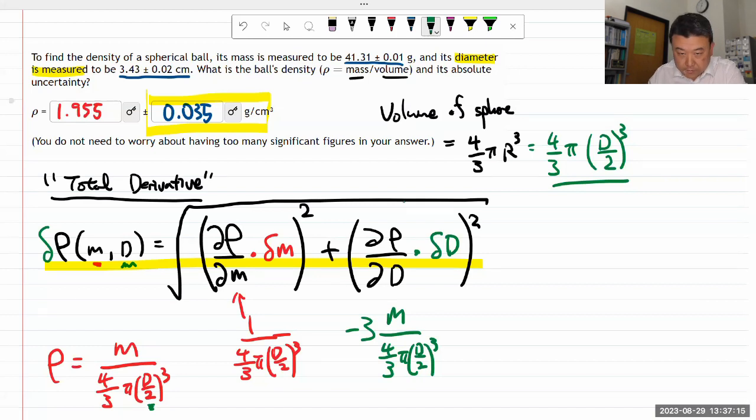Wait, sorry, that's not three, that should be four—that's the power rule. Then taking the derivative of the inside, using power rule, it just gives me that factor of one-half. So that's the formula for the derivative of density with respect to d.